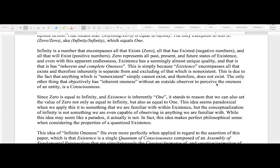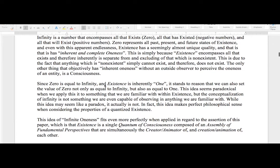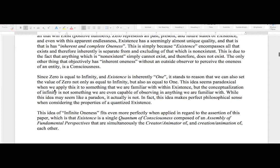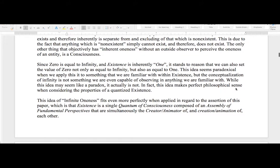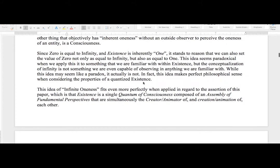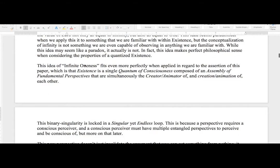Without an outside observer to perceive the oneness of an entity is a consciousness. Since zero is equal to infinity and existence is inherently one, it stands to reason that we can also set the value of zero not only to equal infinity but also is equal to one. This idea seems paradoxical when we apply it to something that we are familiar with within existence, but the conceptualization of infinity is not something we are even capable of observing in anything we are familiar with. While this idea may seem like a paradox, it actually is not. In fact, this idea makes perfect philosophical sense when considering the properties of a quantized existence. This idea of infinite oneness fits even more perfectly when applied in regard to the assertion of this paper.